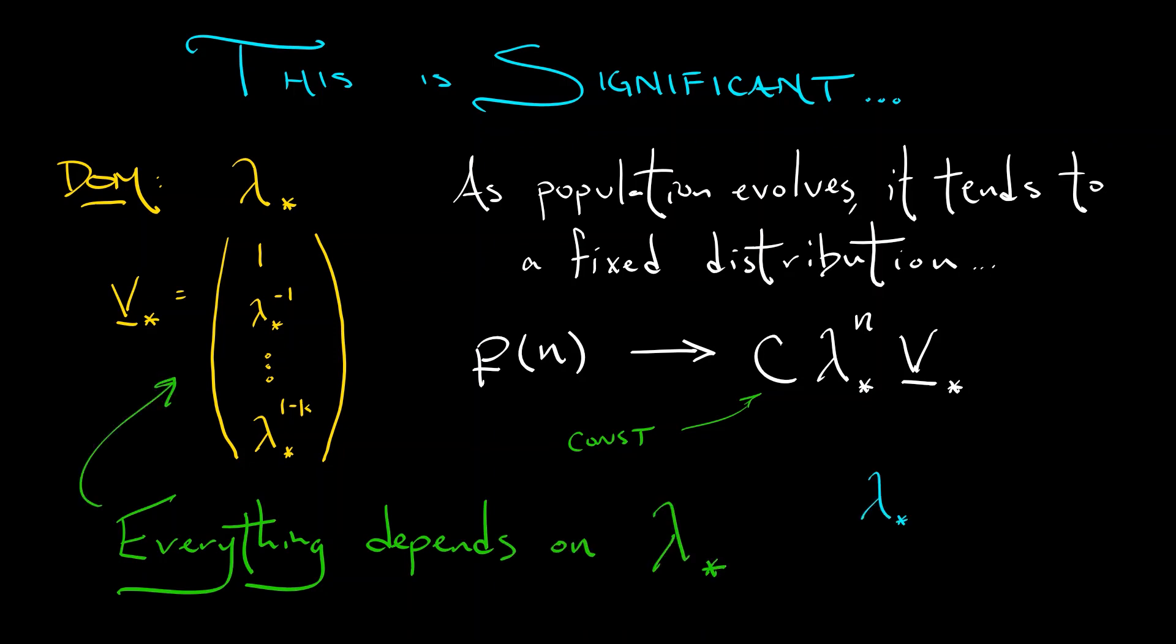If lambda star is less than one, then that means your population is dying off over time. You're taking powers of lambda star. Everything's getting smaller and smaller. But if you look at how your age cohorts are distributed, there's smaller population in the younger age cohorts and relatively larger populations in the older age cohorts. If lambda star is equal to one, then everything is perfectly balanced and you're in stasis. But if lambda star is bigger than one, then your population is growing over time. And you can see how the younger age cohorts have more and more population and the older age cohorts less so.